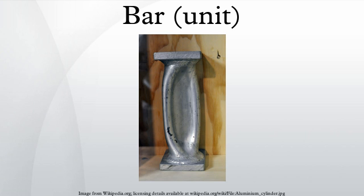Absolute pressure and gauge pressure: Bourdon tube pressure gauges, vehicle tire gauges, and many other types of pressure gauges are zero-referenced to atmospheric pressure, which means that they measure the pressure above atmospheric pressure. This is gauge pressure and is often referred to in writing as barg or bar(g), spoken as bar gauge. In contrast, absolute pressures are zero-referenced to a complete vacuum and when expressed in bars are often referred to as bara or bar(a).